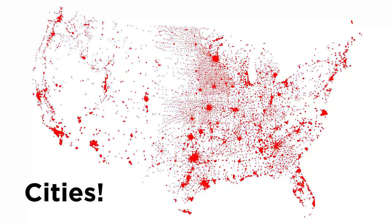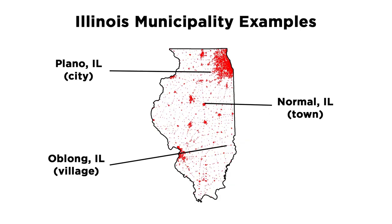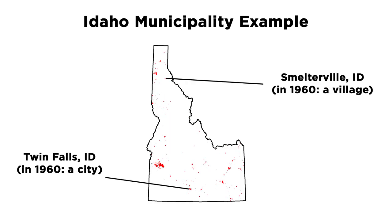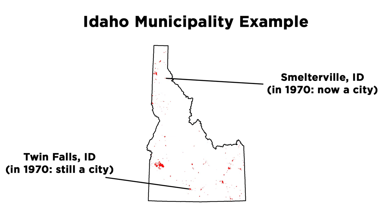Alright, with Hawaii aside, let's actually get into this. We'll start with the easiest type of place to define: the city. In the other 49 states, a city is an incorporated place. And if there are other types of places in the state, a city usually denotes the largest one or the one with the most independent powers. A state like Idaho used to have a more nuanced system to define its municipalities, including villages. But in the late 60s, they decided to simplify things and just call them all cities — there are no formal towns or villages.